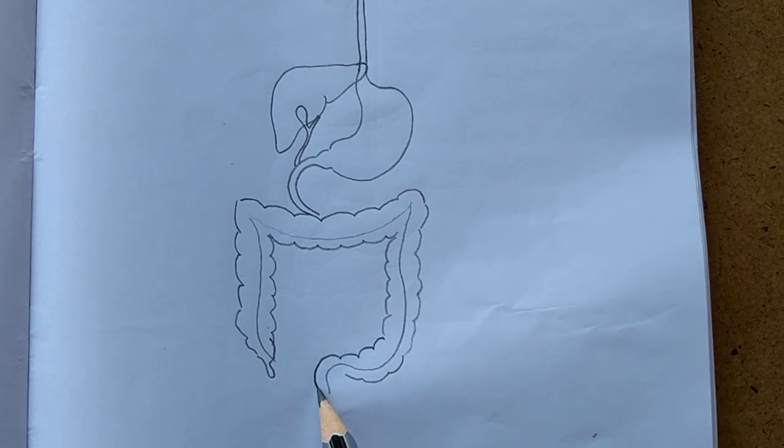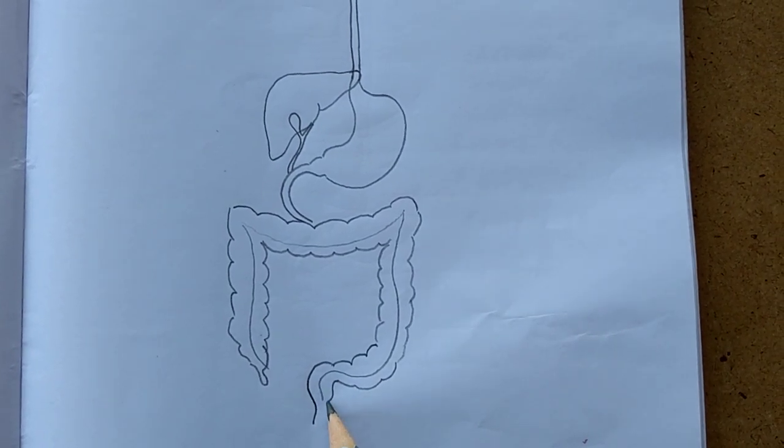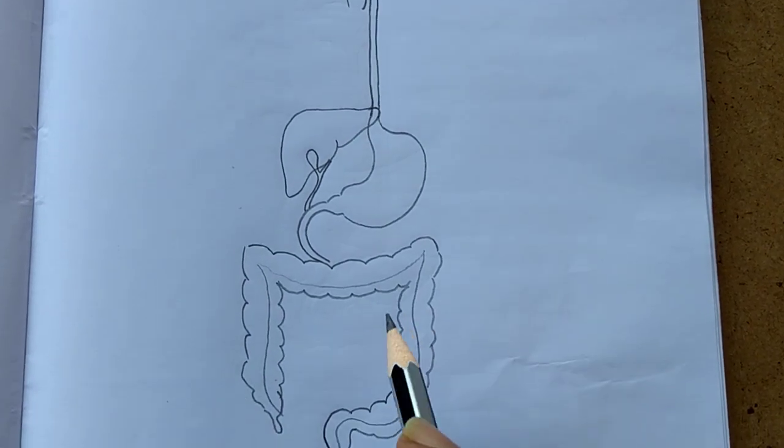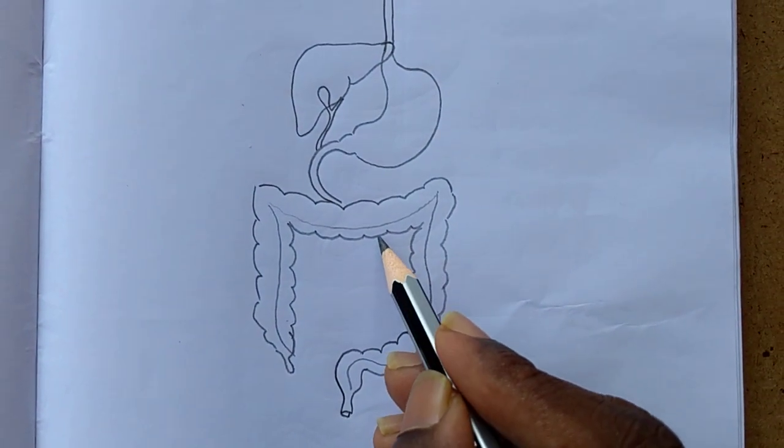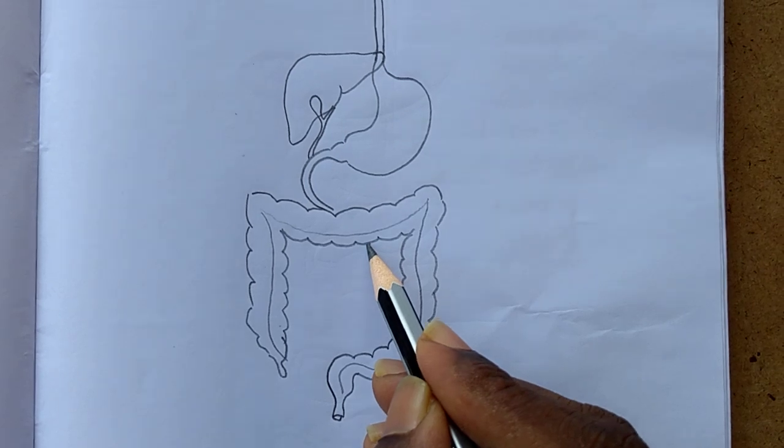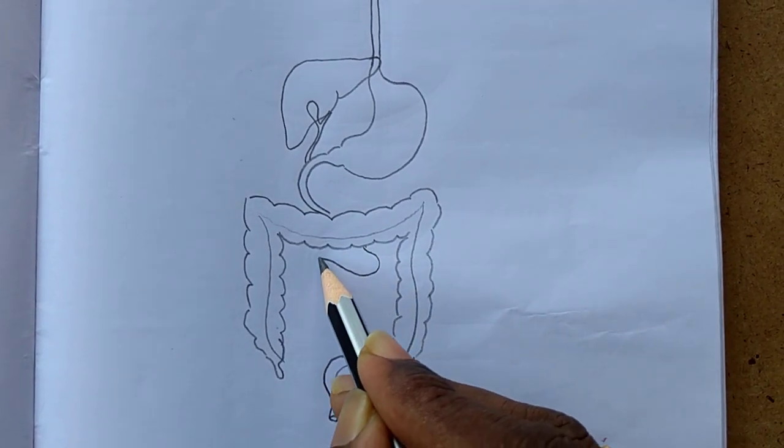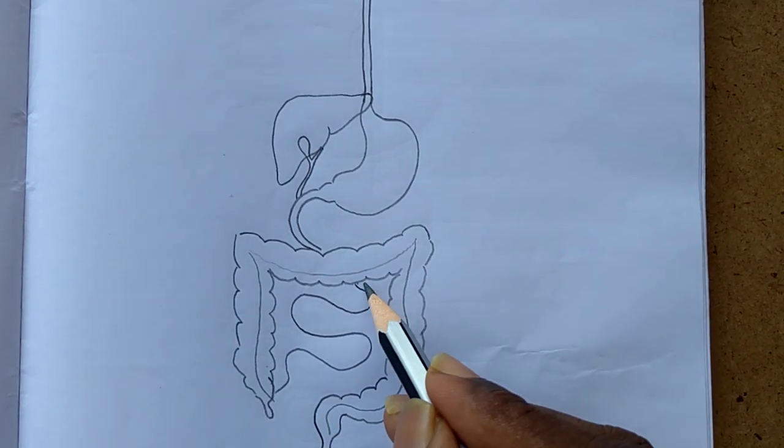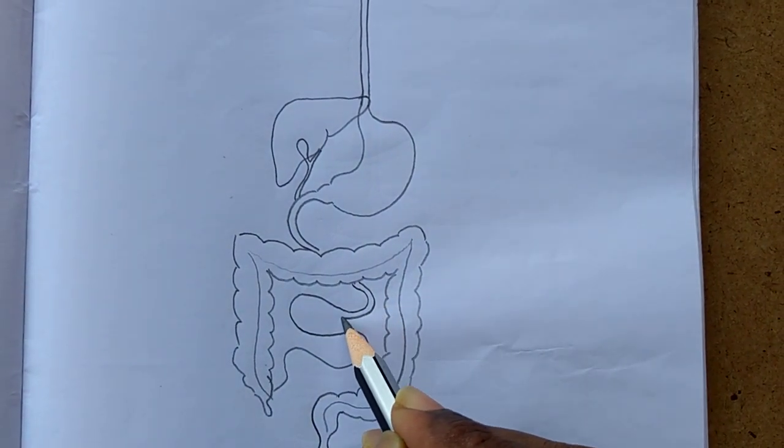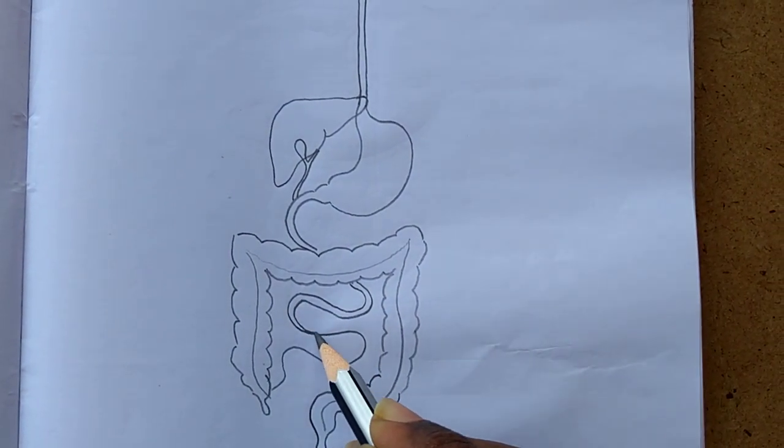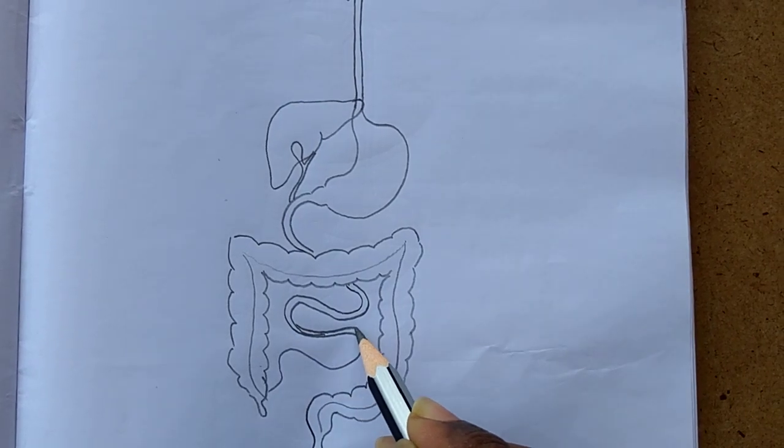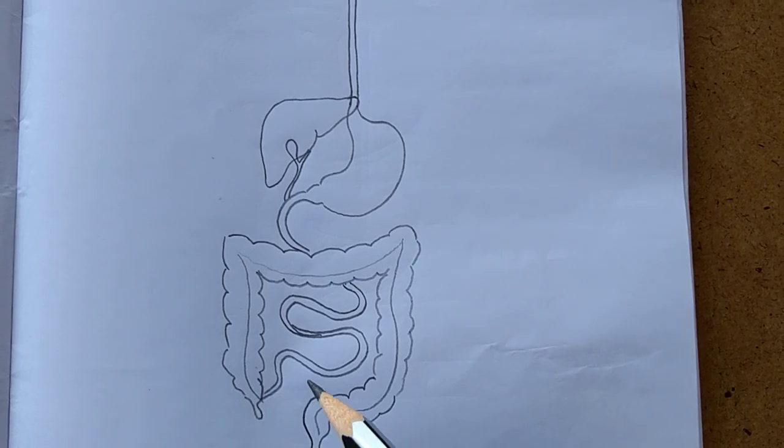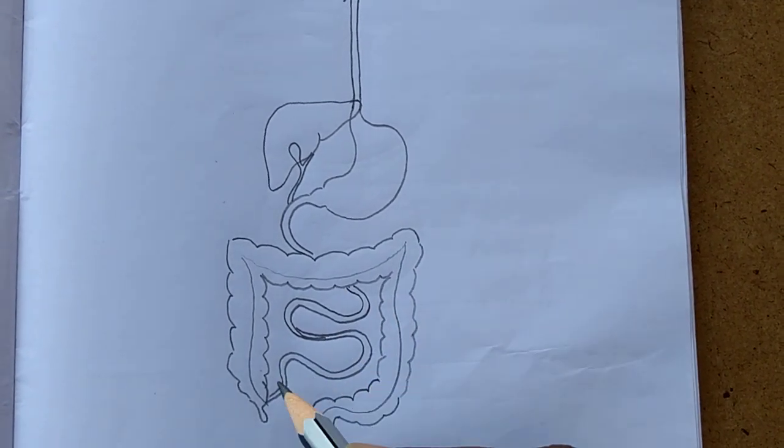Draw the small intestine like this, and from here draw small curved pipe-like structures. The small intestine is very coiled and lengthy, but to draw in an easy manner we are just drawing two or three curves.